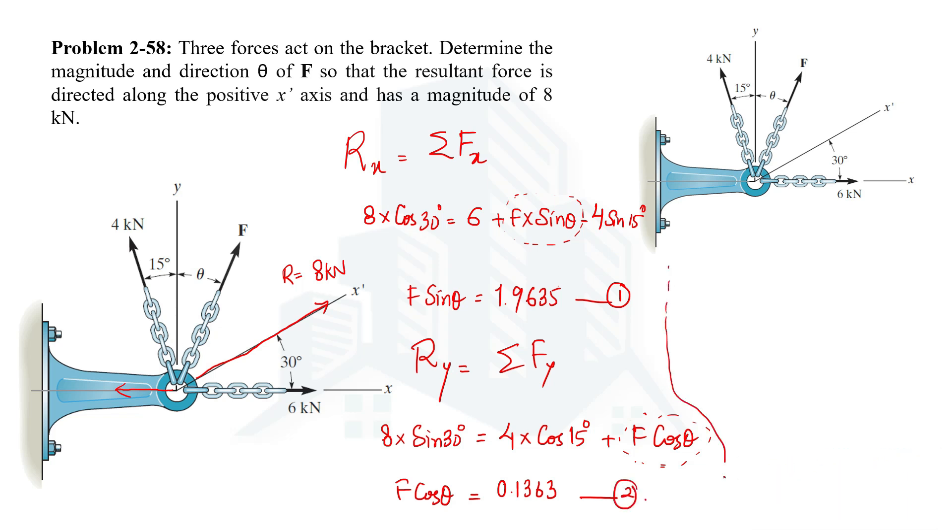Now dividing equation 1 by equation number 2, which means F sine theta equal to 1.9635 divided by F cos theta divided by 0.1363. So this F and F will get cancelled. So tan theta would be equal to 14.4.